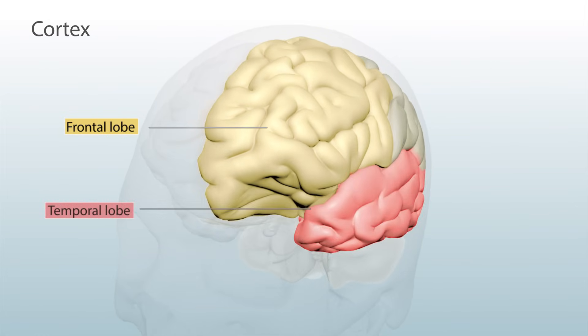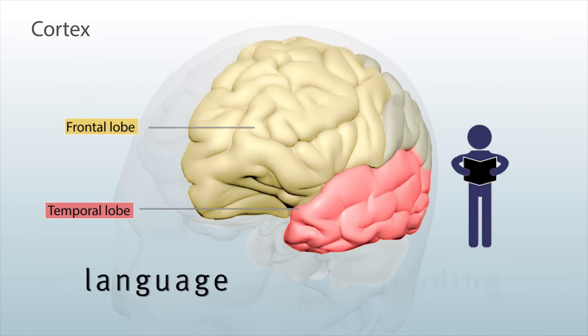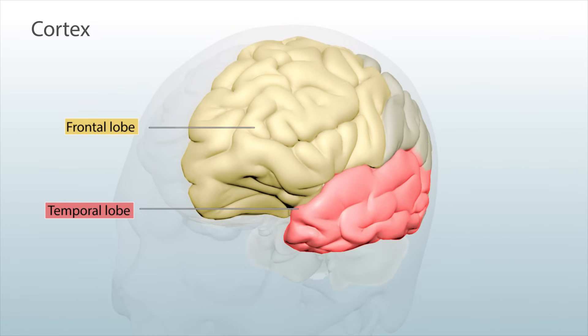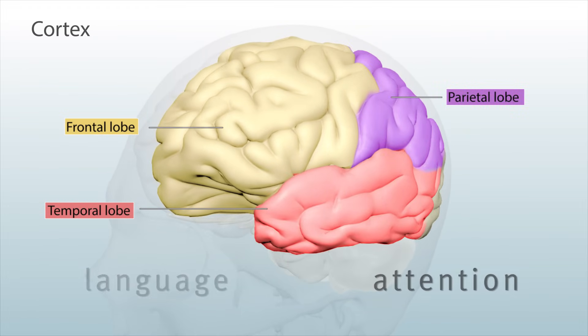The temporal lobe helps process your hearing and other senses, and helps with language and reading. The parietal lobe is involved with your senses, attention, and language.